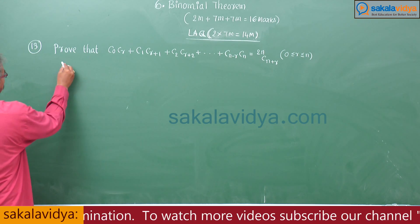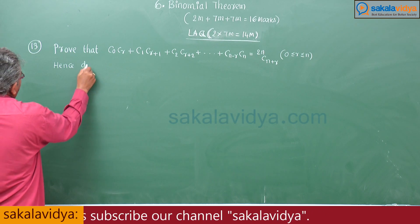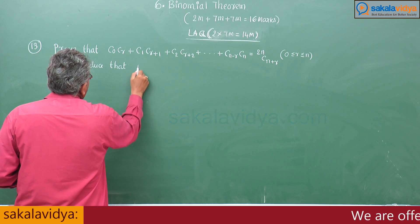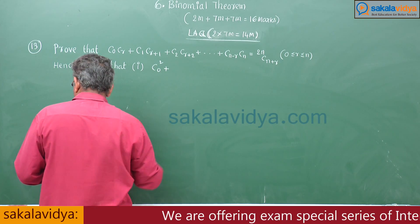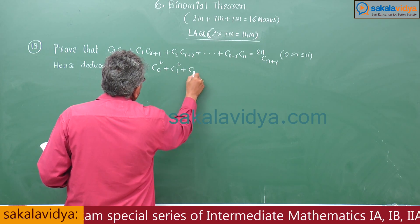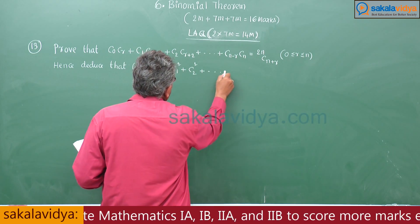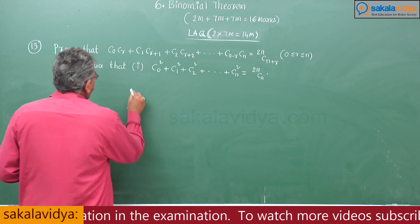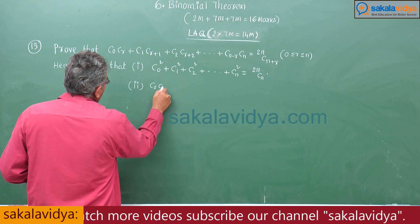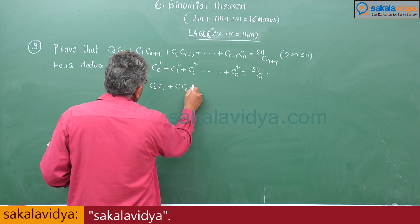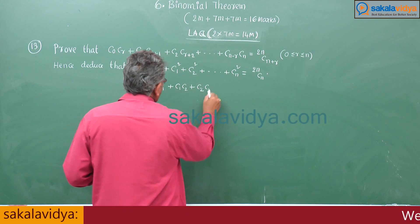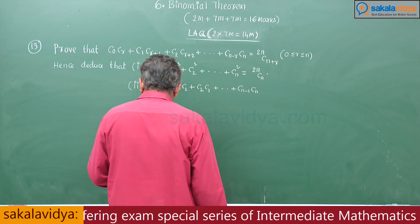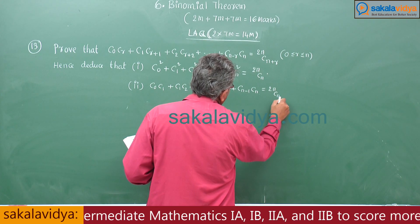Hence, deduce that: first, C₀² + C₁² + C₂² + ... + Cₙ² = 2nCₙ; and second, C₀C₁ + C₁C₂ + C₂C₃ + ... + Cₙ₋₁·Cₙ = 2nCₙ₊₁.